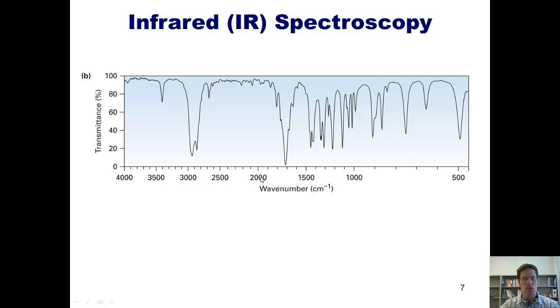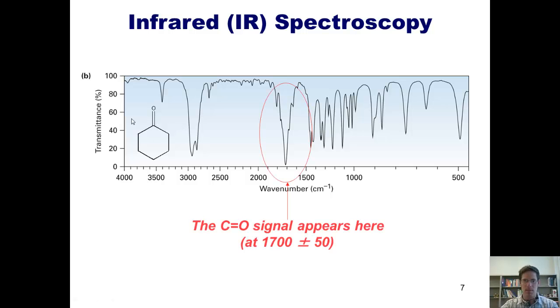Here is the IR spectrum for cyclohexanone, which has this carbon-oxygen double bond, or carbonyl. Does it contain any of the functional groups from our earlier slide? Absolutely. It has a carbonyl. Where does that carbonyl show up? Right here. Remember I said it shows up about 1700 plus or minus 50, and it's huge. Once again, these peaks right here correspond to the CH bonds in the molecule.